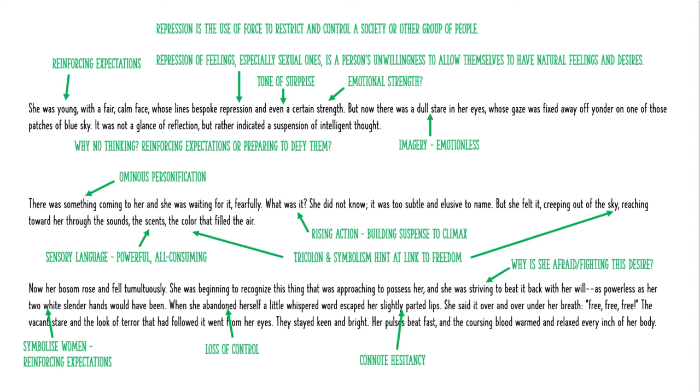She has that hesitancy of saying the word, and when she finally says it we get repetition, tricolon, exclamatory sentence: 'Free! Body and soul free!' We've got this building of acceptance, realisation, happiness coming through from the fact that she's saying that one single word over and over. And the exclamatory sentence conveys the passion with which she is saying it. She's finally accepted what she's feeling — and that is free.